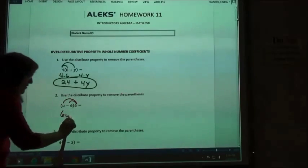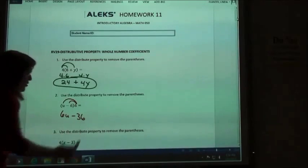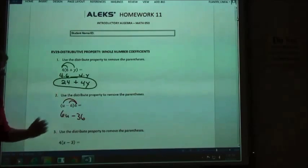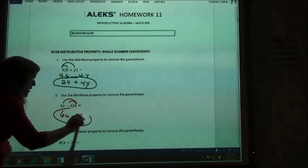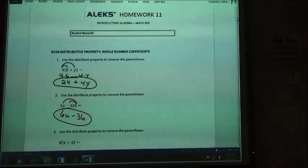Negative times a positive is a negative, so minus 36. So 6u minus 36 is going to be my answer because I can't combine any of those terms.